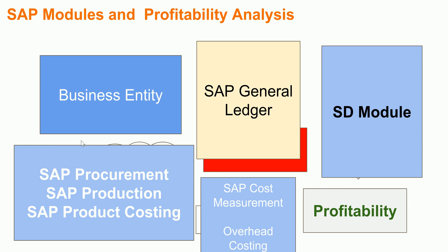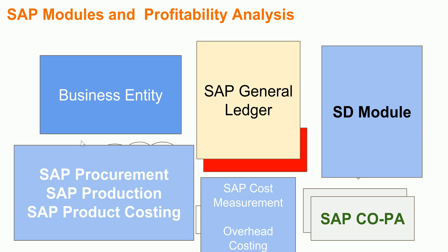At a very high level, the procurement modules, production modules, and cost measurement modules — along with your General Ledger module — are what integrate with the SAP COPA module. The COPA module does not exist on its own; it has to be integrated with all these modules.